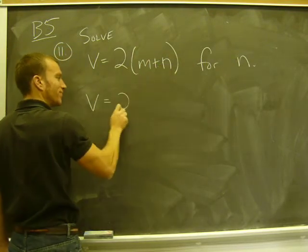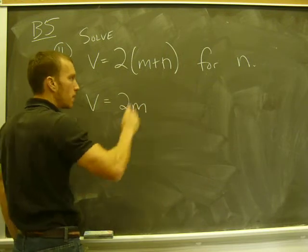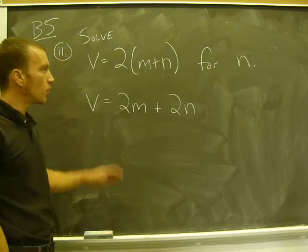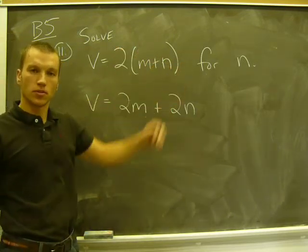So v equals, distribute the 2: 2 times m is 2m, plus 2 times n is 2n. Okay, just like before, get rid of parentheses, distribute the 2 throughout.